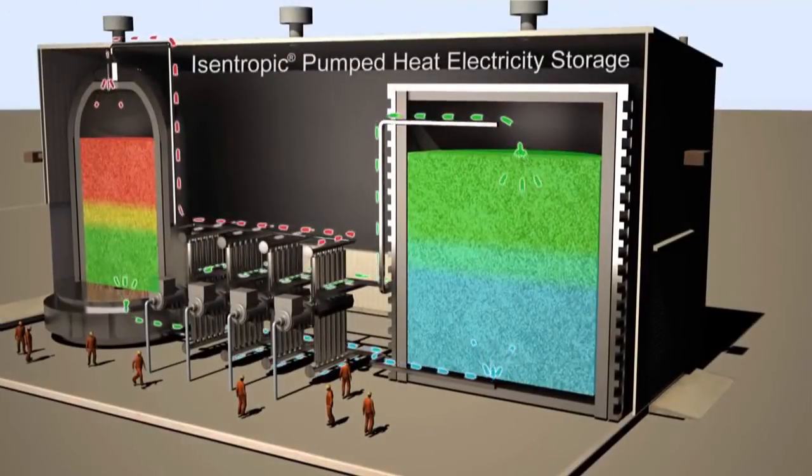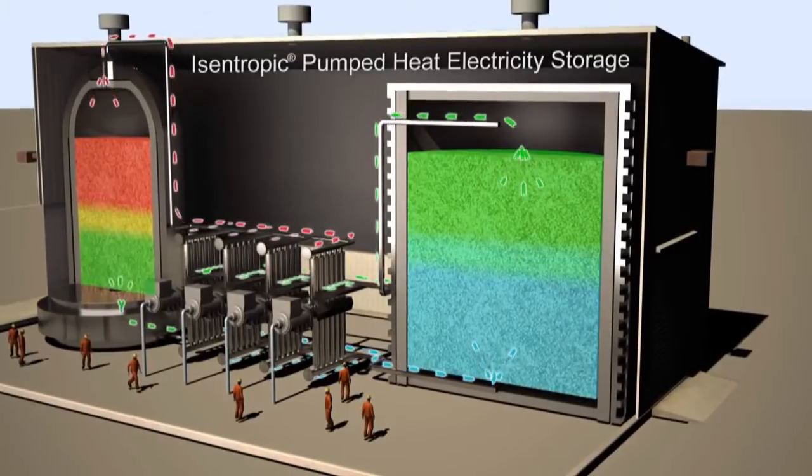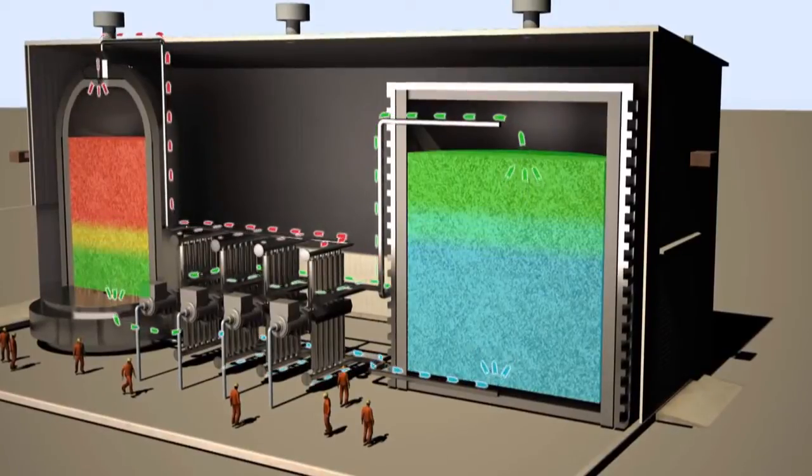Isentropic Pumped Heat Electricity Storage provides the low capital cost per kilowatt-hour benefits associated with pumped hydropower and, like battery storage, is deployable anywhere in the world.